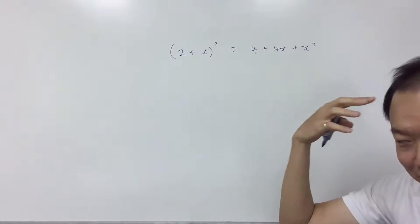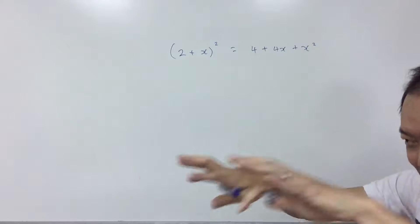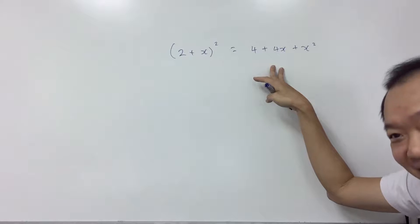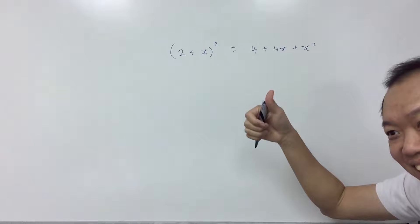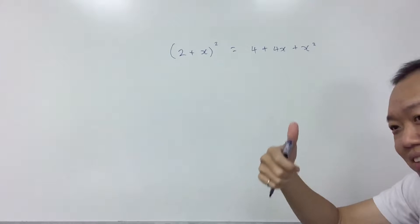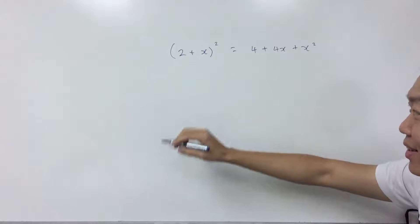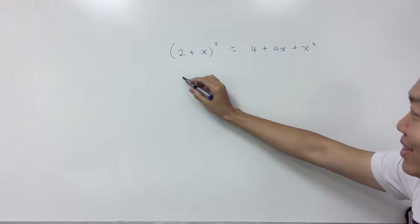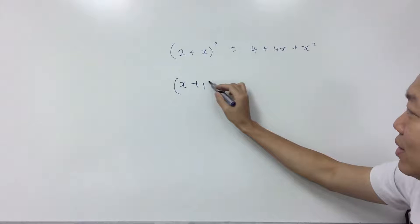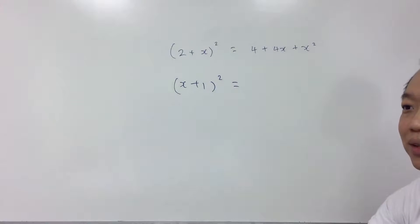You understand? Okay, now you try. X plus one, try it the other way. X plus one squared. Remember this is a square — yeah? X squared plus...